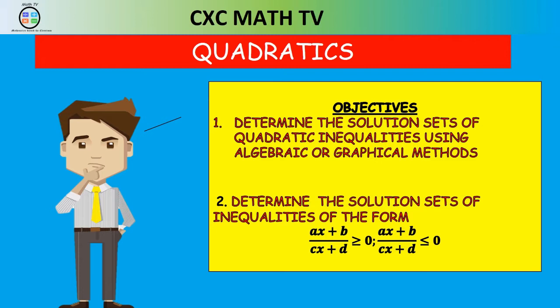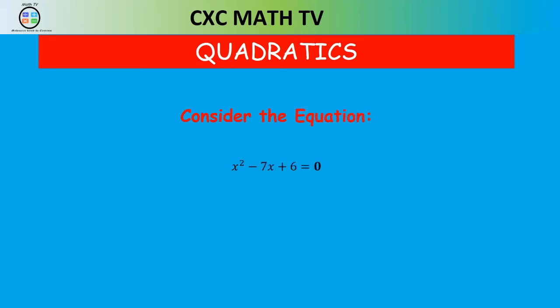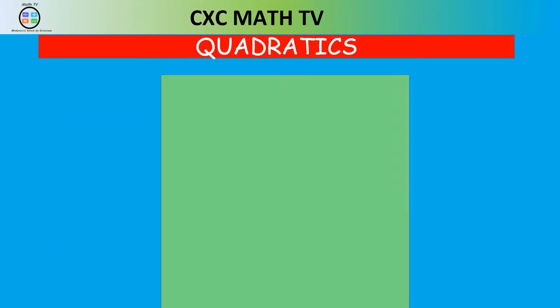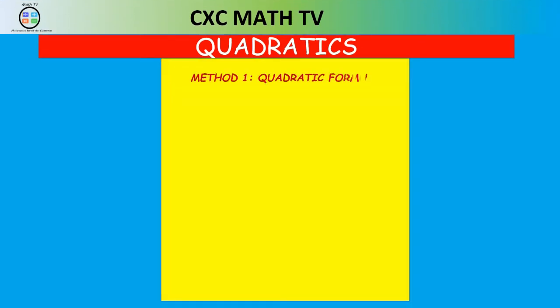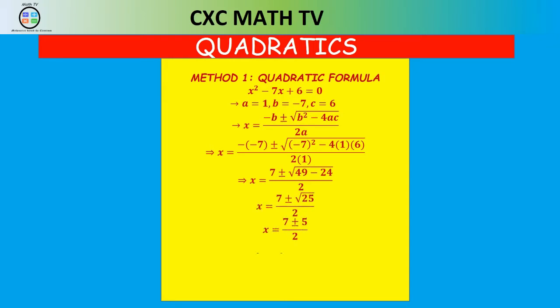Let's get into quadratic inequalities. Consider the equation x² - 7x + 6 = 0 and solve for x. Using the quadratic formula — it's already in standard form — we know a = 1, b = -7, and c = 6. Substituting into the quadratic formula gives us x = 6 or x = 1.